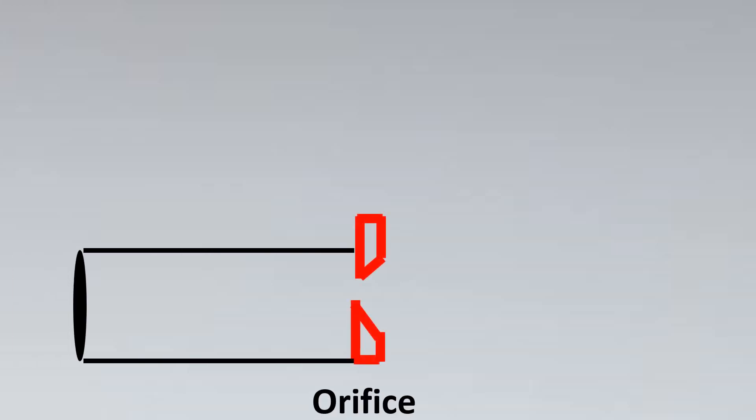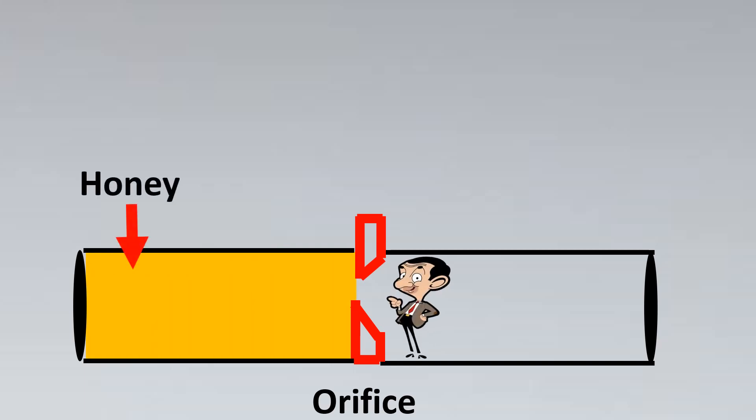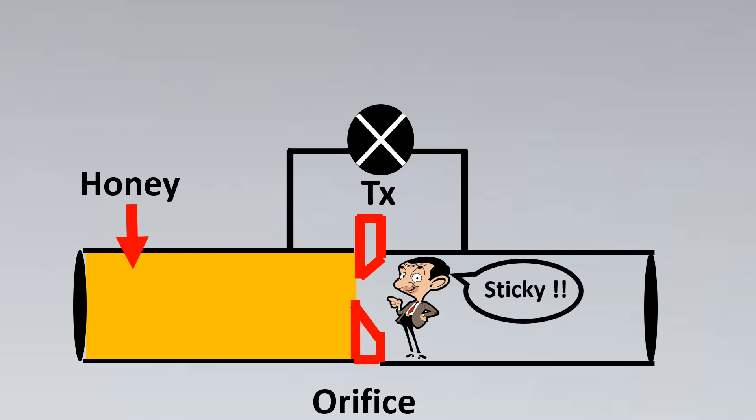So imagine that this is your orifice flow meter and here's your pipeline. Now once we enter honey into this pipeline, what is going to happen? If you look at this point of time, are you being able to get a substantial DP? The answer to that is no. So if your transmitter wants to measure the DP, which is the principle for orifice flow meters, it would not be able to get a substantial DP because this fluid is very sticky.